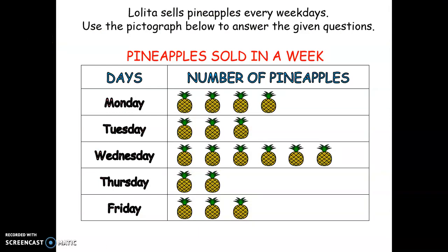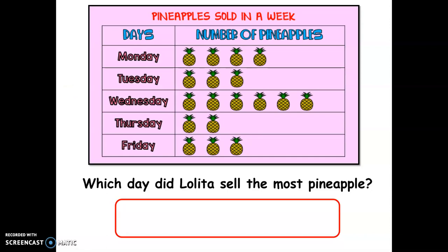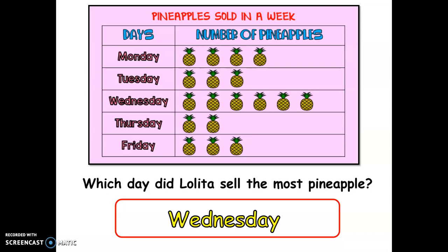Now, here it shows that Lolita sells pineapples every weekday. Use the pictograph below to answer the given questions. These are the pineapples sold in a week — these are the days, and these are the number of pineapples. Which day did Lolita sell the most pineapples? Wednesday, because Lolita was able to sell six pineapples on that day.